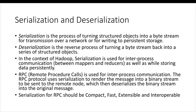In the context of Hadoop, serialization is used for inter-process communication as well as while storing data persistently. The output of the mapper has to go through the shuffle and sort phase and then pass on to the reducer. There is inter-process communication which needs to be done, and that is done using serialization and deserialization. Also when you want to store this data you have to serialize it so that the data can be stored as part of the blocks in the files.